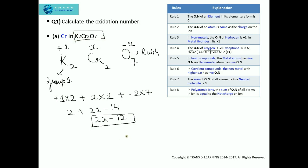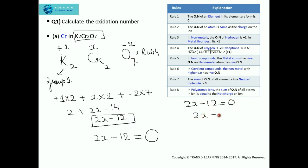As per step four, we write the net charge on potassium dichromate — zero — on the right hand side, and the sum of the oxidation numbers on the left hand side. As per step five, we do the mathematical calculation: two x minus twelve equals zero, two x equals twelve, x equals twelve divided by two. So x equals plus six. The oxidation number of chromium in potassium dichromate is plus six.